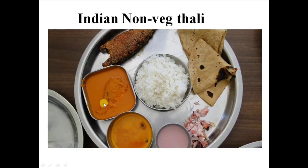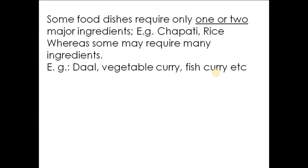If we take an example of a non-vegetarian thali — especially Goan fish curry thali — it includes rice, fish, fish curry, kokam curry, some fresh salad, and chapati. In both the thalis, many food items or dishes were present. Each of these requires many ingredients to prepare. Some dishes require only one or two major ingredients, as seen in case of chapati and rice.